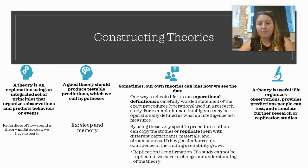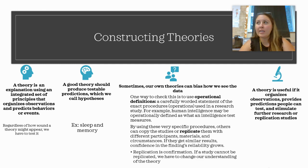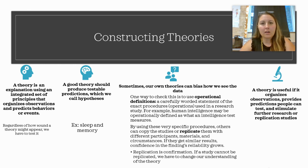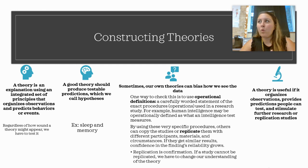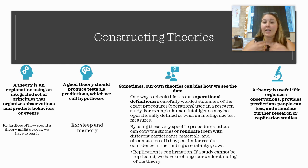An operational definition is a carefully worded statement of the exact procedures or operations used in a research study. For example, if I want to study human intelligence — which is a vague concept — my operational definition might be a person's score on an IQ test. Another example: if I want to measure sadness, I need something actually measurable, so I might measure the number of times a person cries in a day. That's an operational definition because I can measure it.